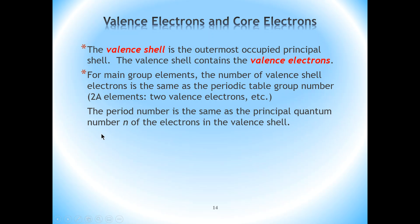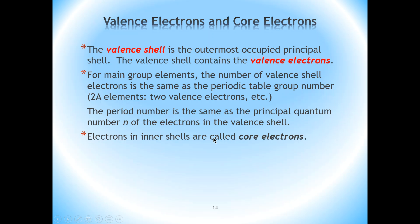For example, elements that are in period 3 would have their valence shell in the third shell. So the valence shell electrons are those electrons occupying the highest energy shell.